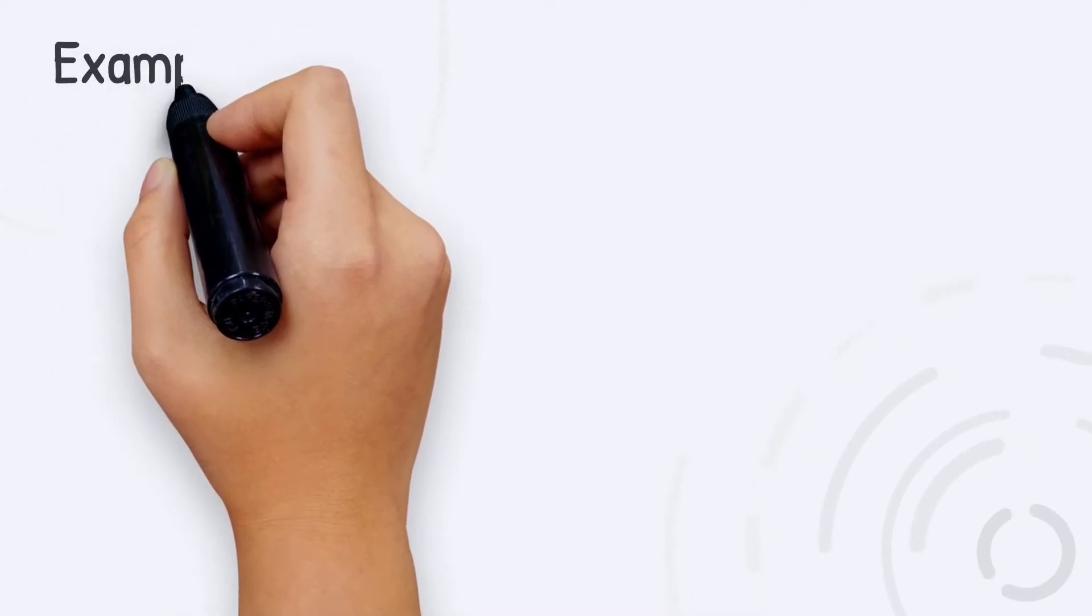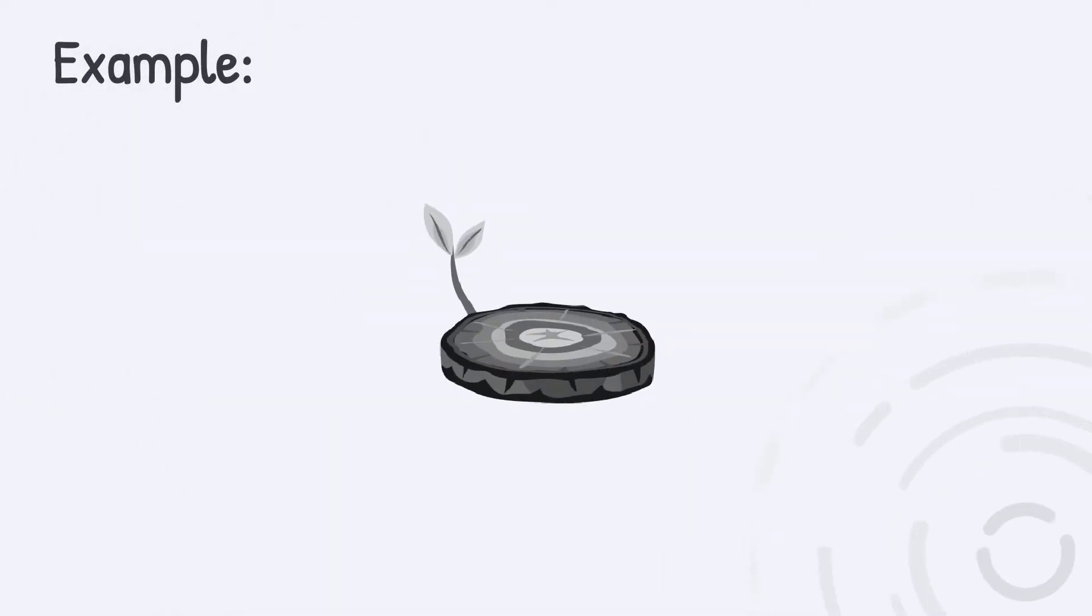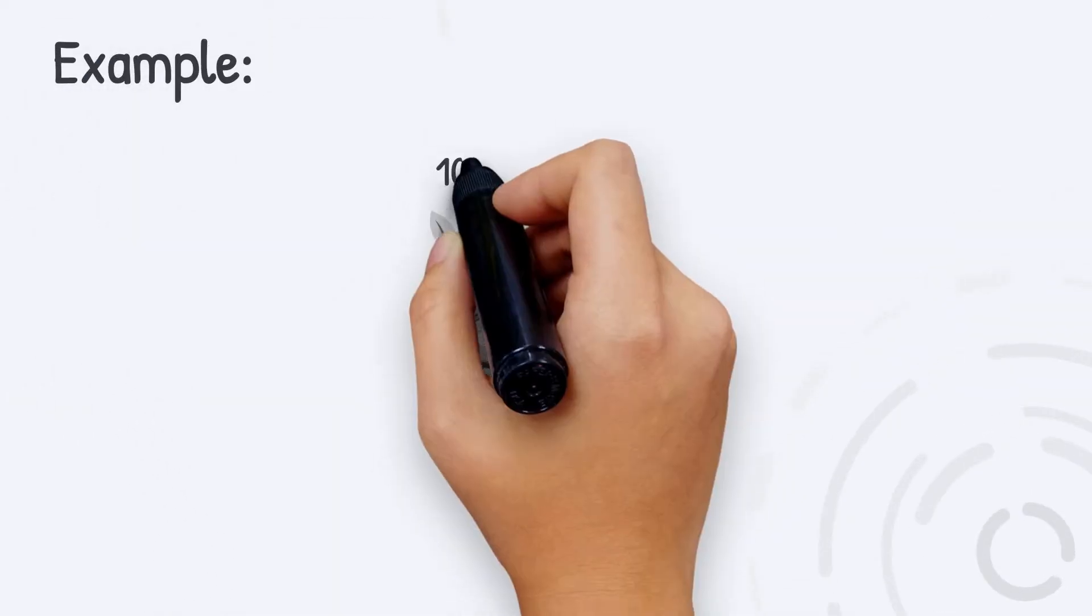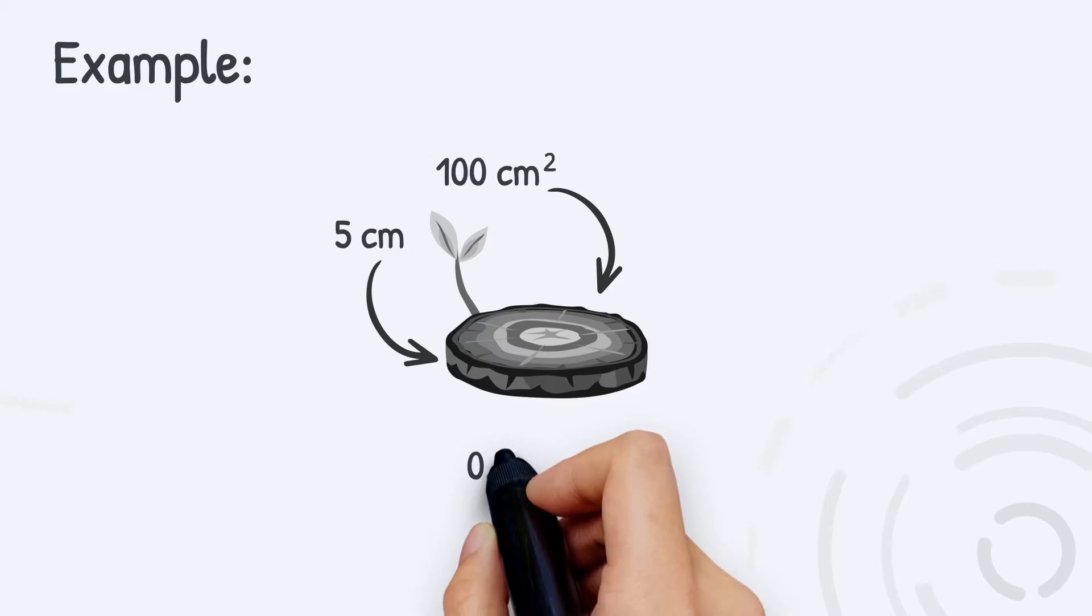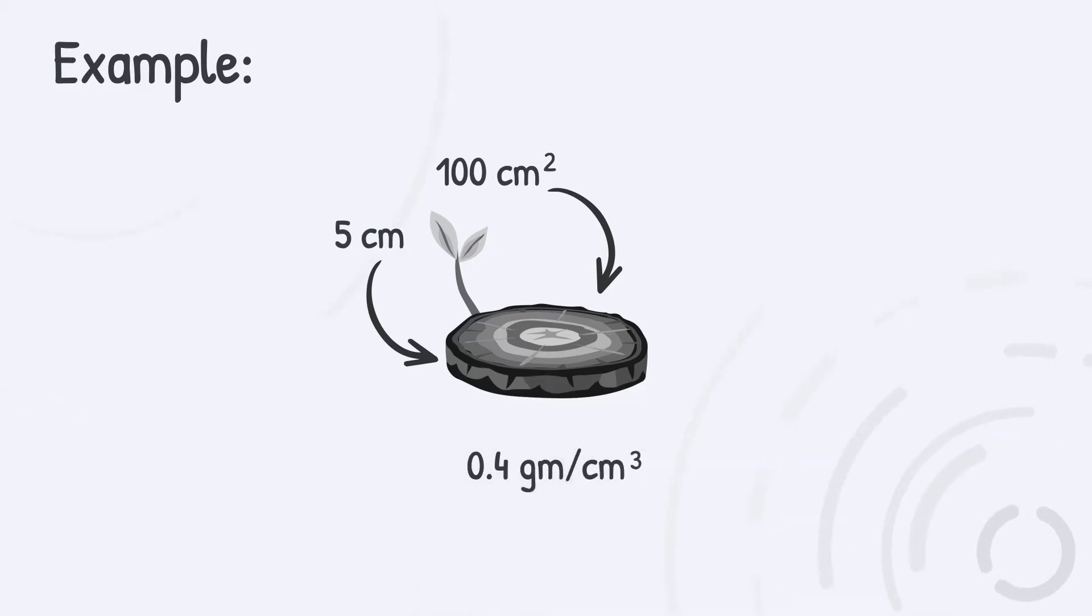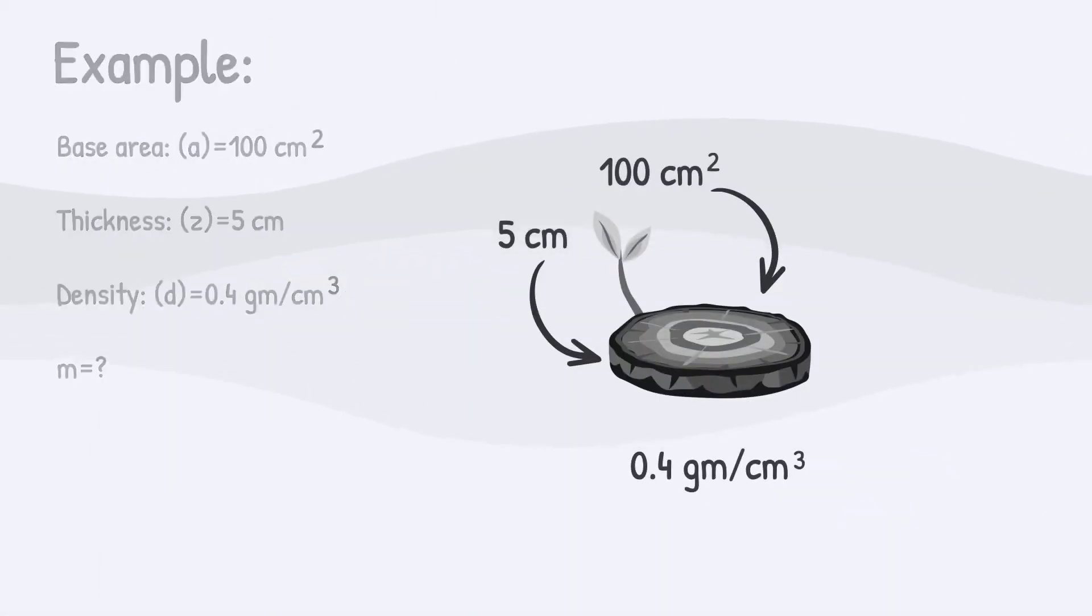Now let's take this example. Suppose you have a piece of wood with a base area of 100 centimeters square and a thickness of 5 centimeters. If you know the wood density was 0.4 grams over centimeters cubed, what is the mass of this wood piece?